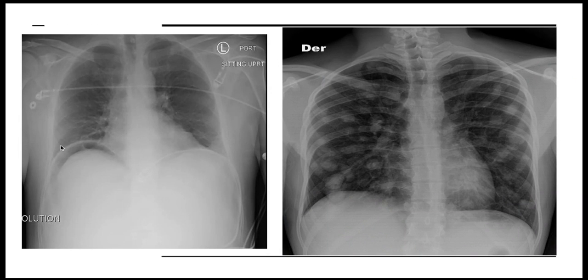The third case shows perforation of a peptic ulcer — there is air accumulated under the right diaphragm, which indicates perforation. The fourth case shows several rounded nodules of variable size in the lungs, which indicates lung metastasis.